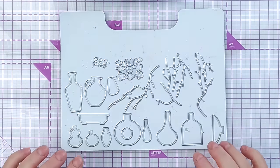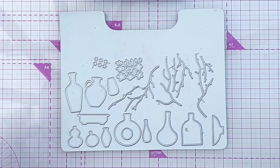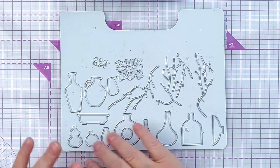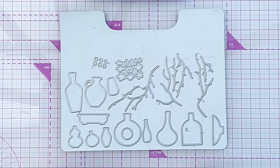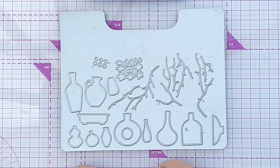I used this die set that I got from Amazon and it's relatively inexpensive. You get lots of vases or jugs, you get your branches and your cherry blossom.